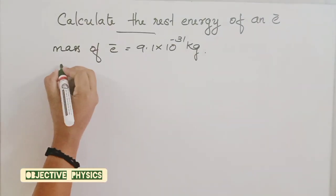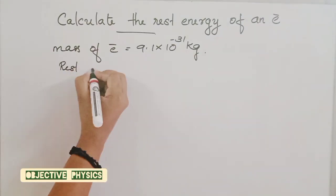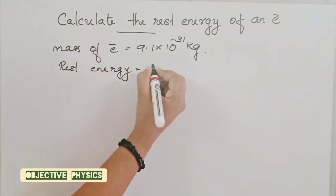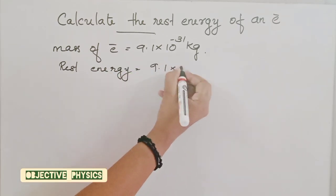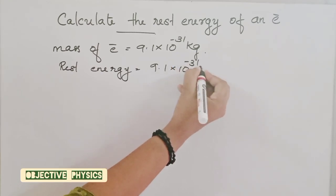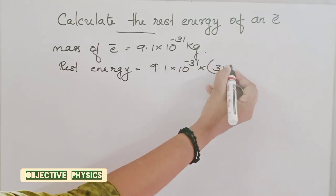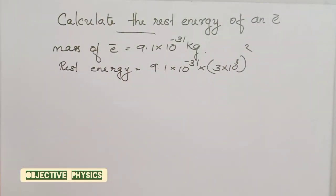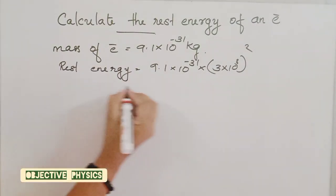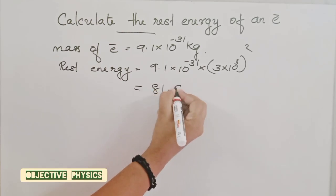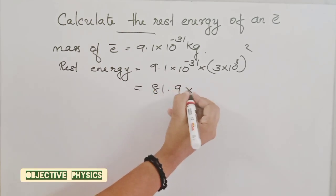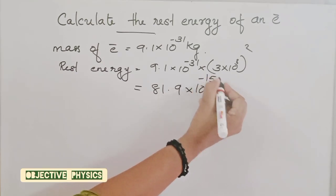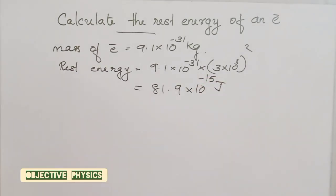Rest mass energy E₀ is equal to M₀c², that is 9.1 × 10⁻³¹ into 3 × 10⁸ the whole square. The answer is 81.9 × 10⁻¹⁴ joule.